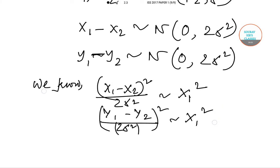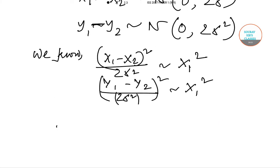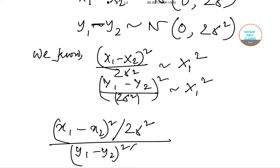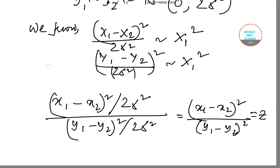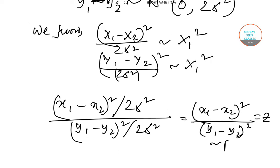Now we can say that (x₁ - x₂)²/(2σ²) divided by (y₁ - y₂)²/(2σ²) equals (x₁ - x₂)² divided by (y₁ - y₂)², which equals Z, which follows an F distribution with parameters 1 and 1.